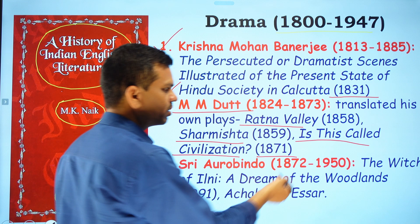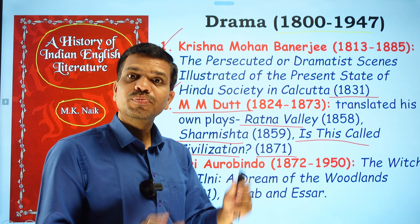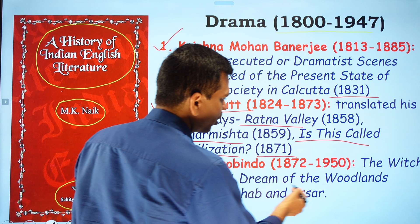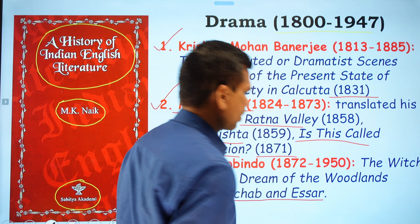Sri Aurobindo, whose poetry including Savitri is also famous, contributed two plays: The Witch of Ilni, A Dream of the Woodlands (1891), and Achav and SR. These are the notable dramatic works attributed to Sri Aurobindo.